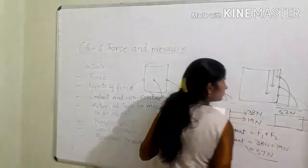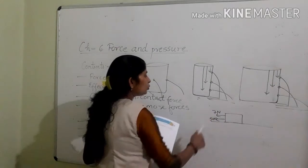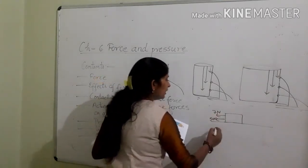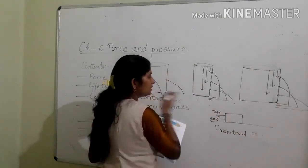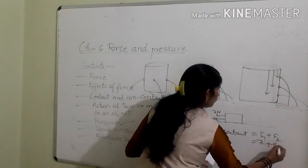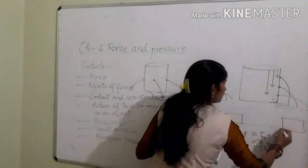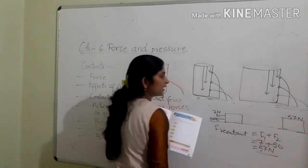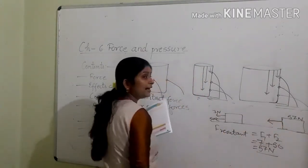Third part: there are two unequal forces of 7 Newton and 50 Newton acting on the same object in the same direction. F resultant equals F1 plus F2, that is 7 Newton plus 50 Newton, giving an answer of 57 Newton. So the net or resultant force of 57 Newton is acting on the object, and this object moves in the same direction as F1 and F2.